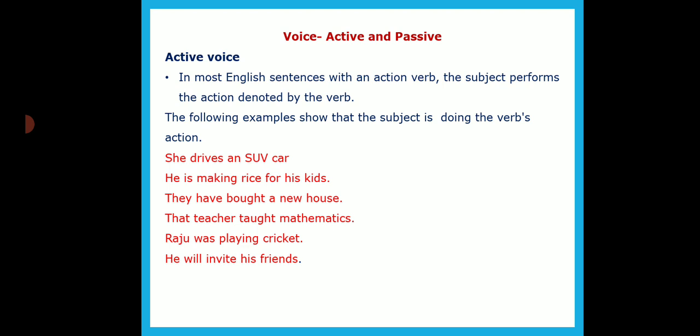'He is making rice for his kids.' Here, 'he' is the subject, 'is making' is the verb, and 'rice' is the object, which is directly acted upon by 'he.' 'They have bought a new house.' 'That teacher taught mathematics' — subject, verb, object. 'Raju was playing cricket.' 'He will invite his friends.' If you look at all these sentences, each is in a particular tense, and we must identify the tense to learn the conversions of active voice to passive voice.